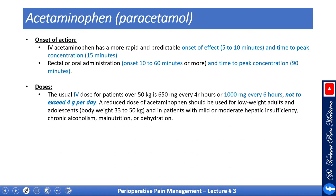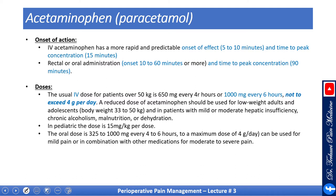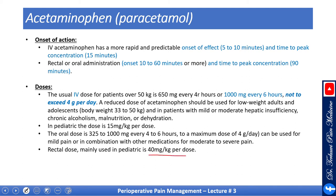IV acetaminophen has a more rapid and predictable onset of 5 to 10 minutes with peak at about 15 minutes. Rectal or oral administration onset is 10 to 60 minutes with peak at about one and a half hours. For patients over 50 kg, the dose is 650 mg every 4 hours or 1 gram every 6 hours, not to exceed 4 grams per day. A reduced dose should be used for adults and adolescents below 50 kg and in patients with mild to moderate hepatic insufficiency, chronic alcoholism, malnutrition, or dehydration. In pediatrics, the dose is 50 mg per kg per dose, with a maximum of 4 grams per day. Rectal dose is 40 mg per kg per dose.